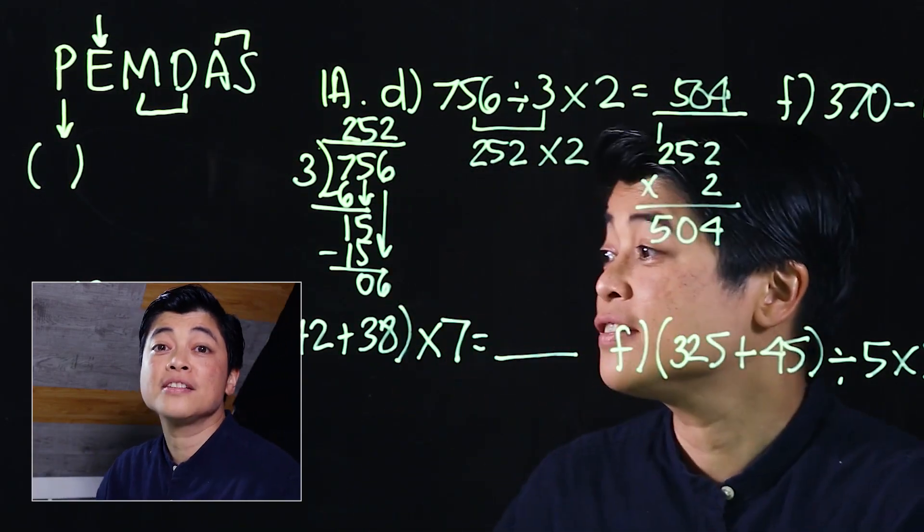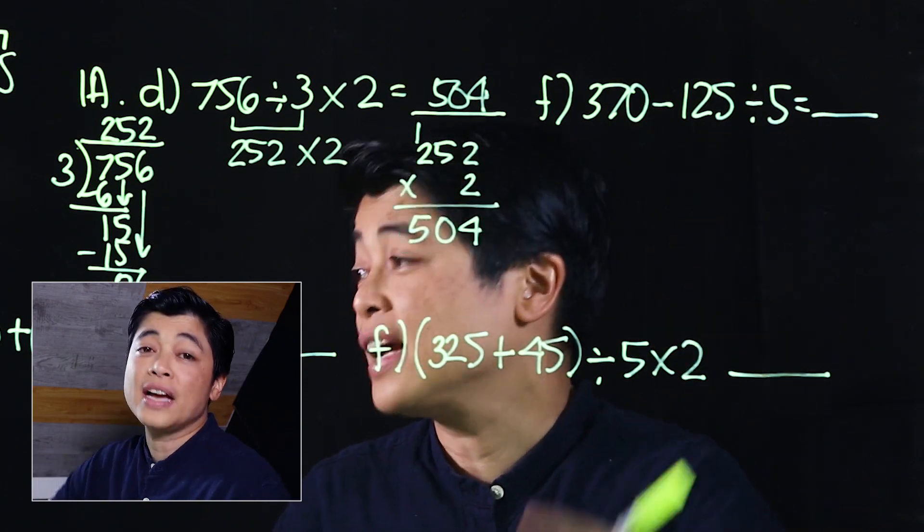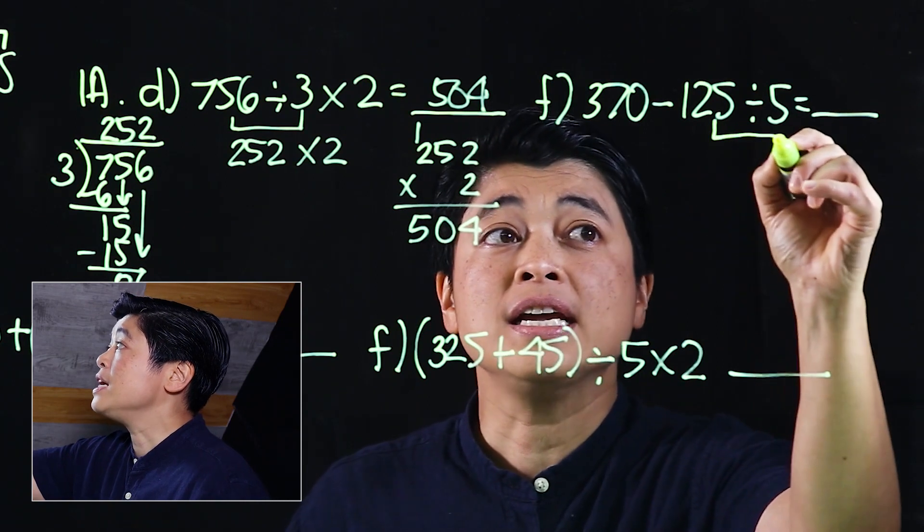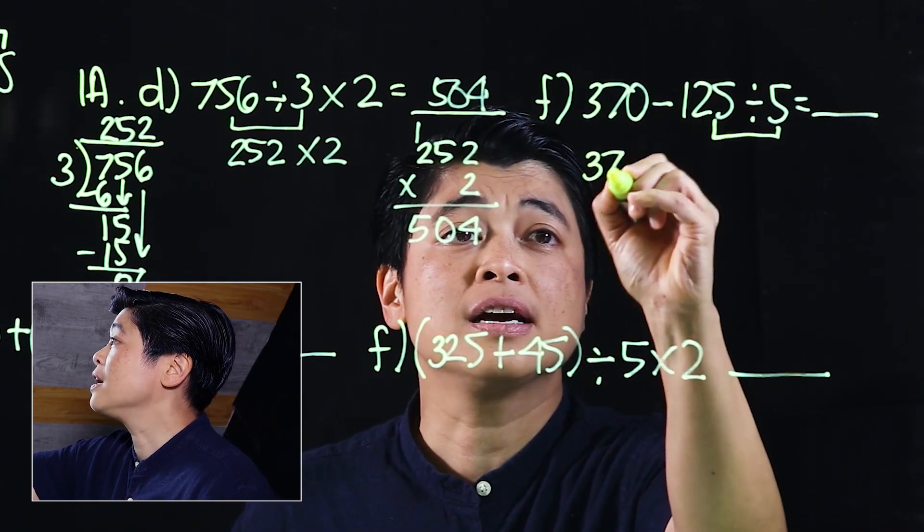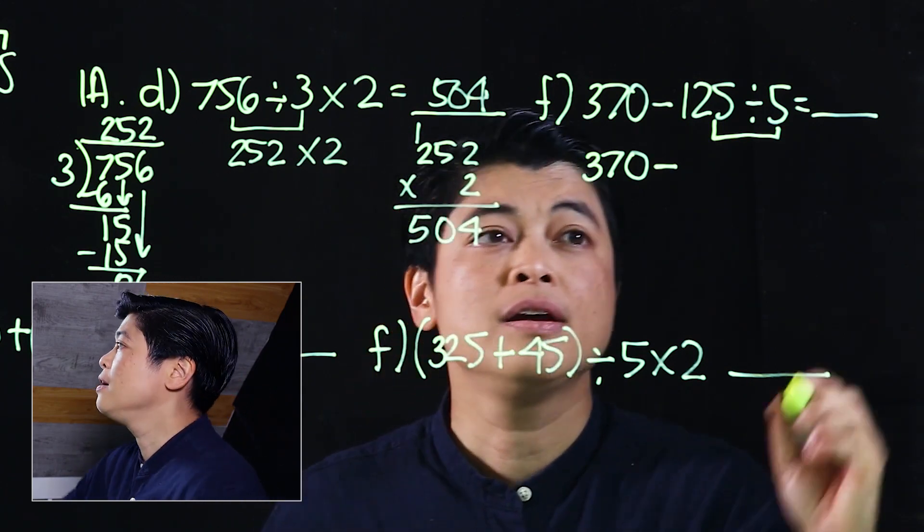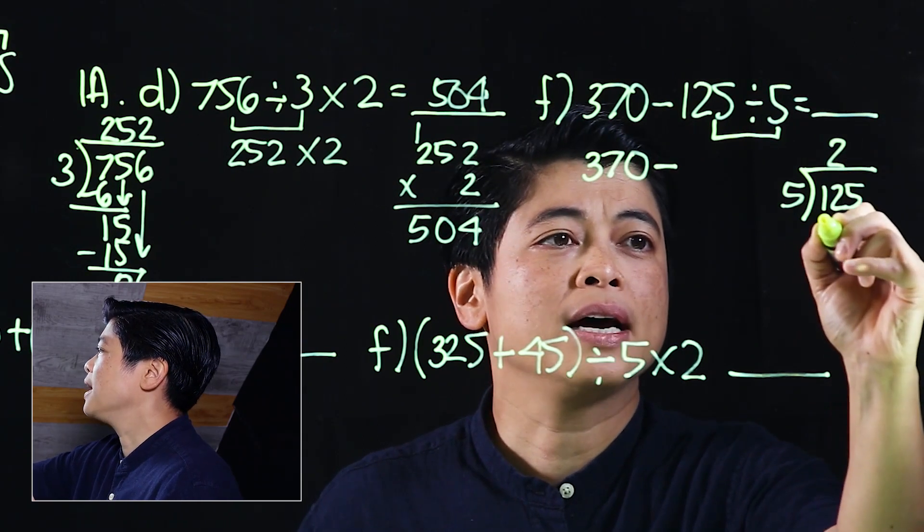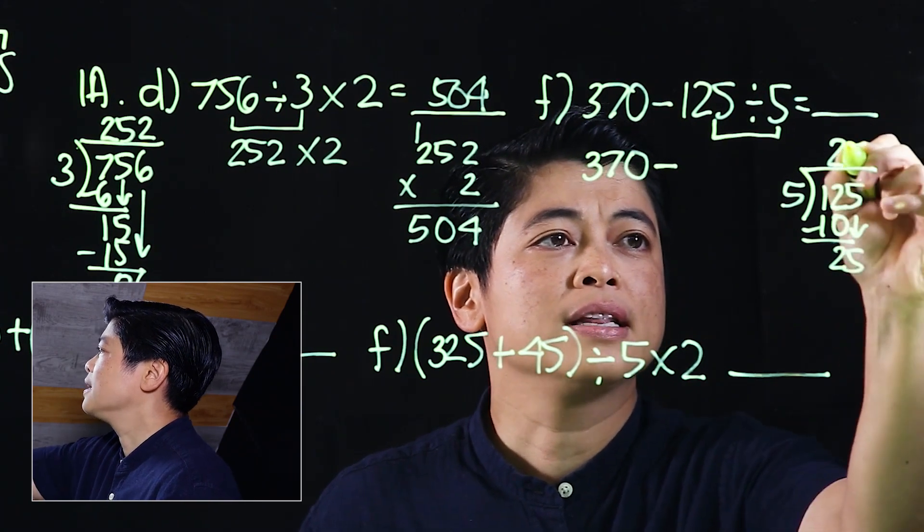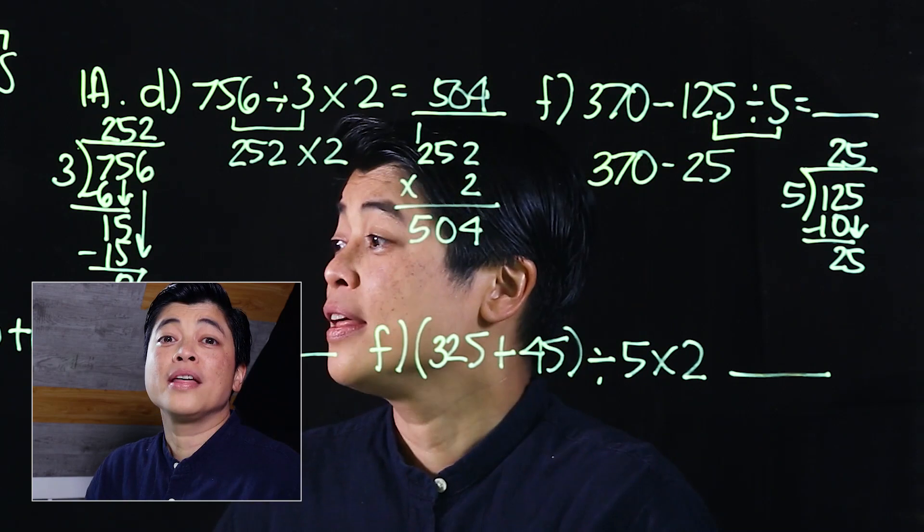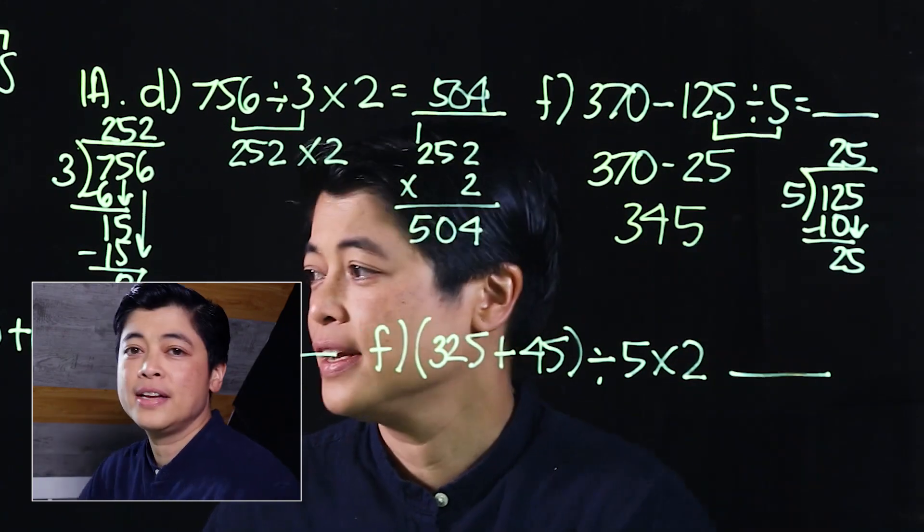The answer to the first problem is 504. Let's see the second problem. It says 370 minus 125 divided by 5. We have to multiply or divide before we can add or subtract, which means we start here. We have to copy first 370 then minus, and then we divide the 125 by 5. If we can't do it mentally, we put it on the side. 125 divided by 5: this is 2, multiply 10, subtract 2, bring down 5, that will be 25. So that means 370 minus 25. Now 370 minus 25 is going to be 345.